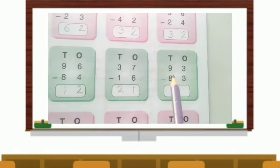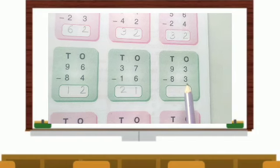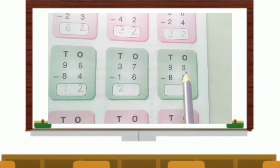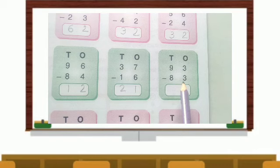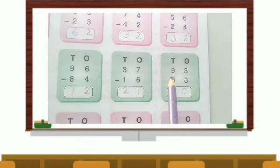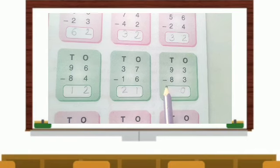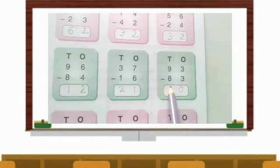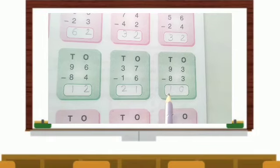Next is 93 minus 83. Ones house: 3 minus 3. Anything left? You will get 0. 9 minus 8 is 1. Answer is 10.